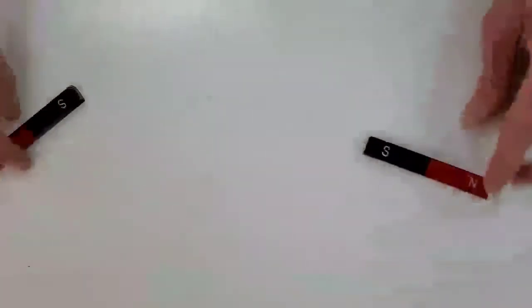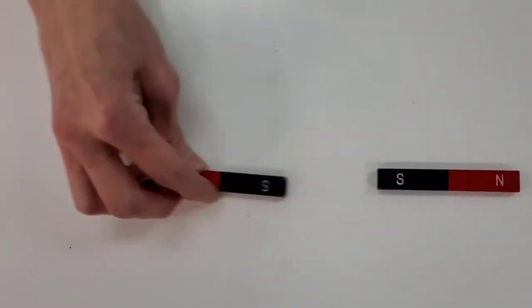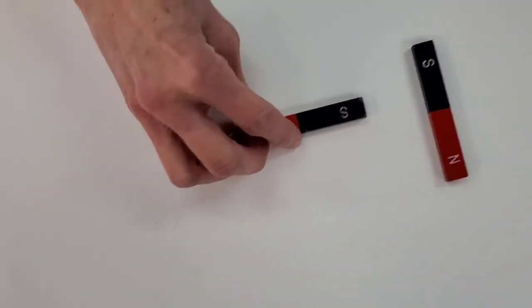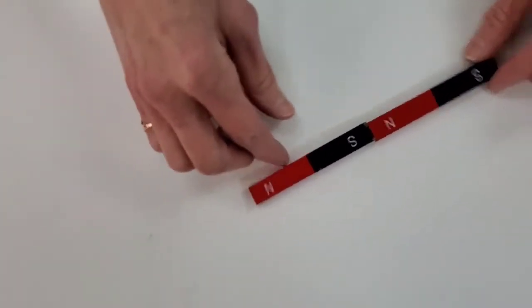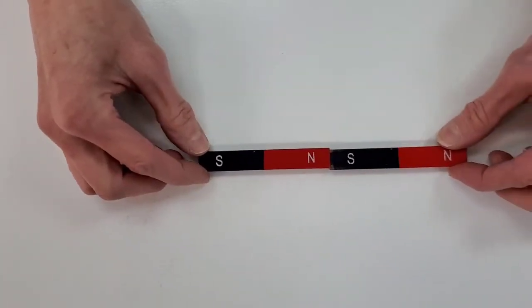Let's see that again, only with south poles. Magnets will have a north and a south pole or they can have a positive and a negative pole.